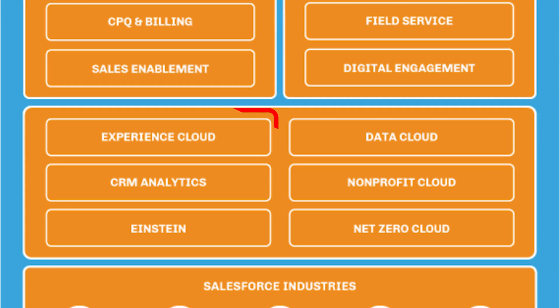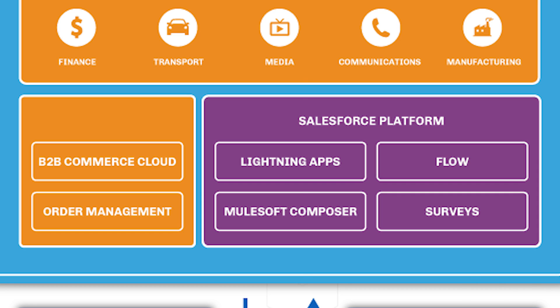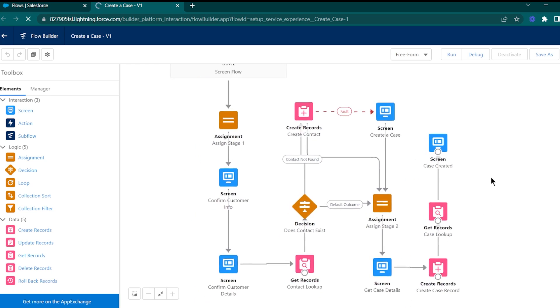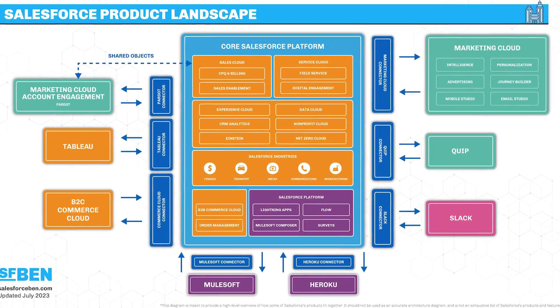The core Salesforce platform has two major advantages over some other products. Firstly, you can bolt on other products such as CRM Analytics or Salesforce Experience Cloud with minimal implementation. In addition, you also get access to the Salesforce platform, which is a set of tools that allow you to create completely custom experiences for your users and customers, taking advantage of features such as Salesforce Flow and the Lightning App Builder. We'll use the following infographic to help outline the products and how they connect to one another.